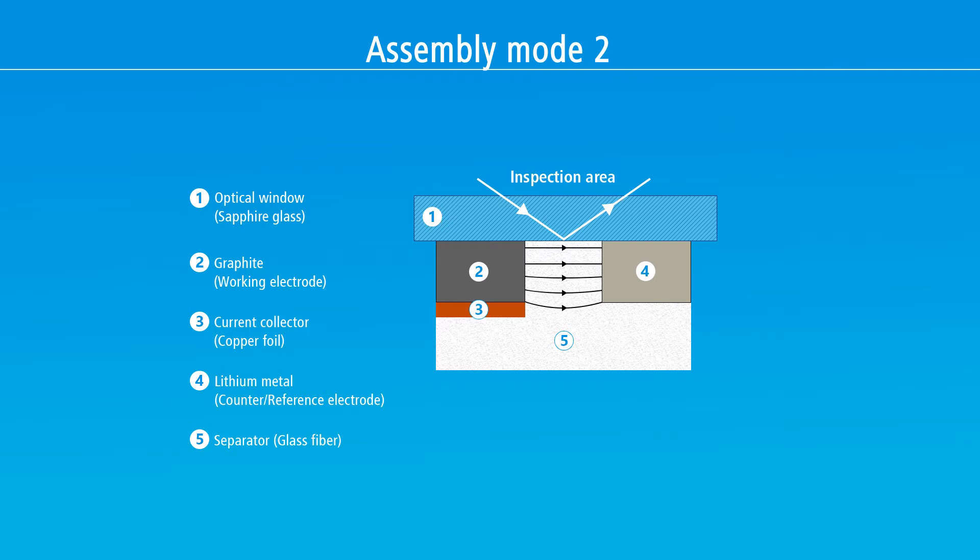Importantly, the graphite electrode is placed with its active layer pointing towards the window on top. This way, the current cannot enter vertically through the copper foil but only from the edges of the graphite strip.